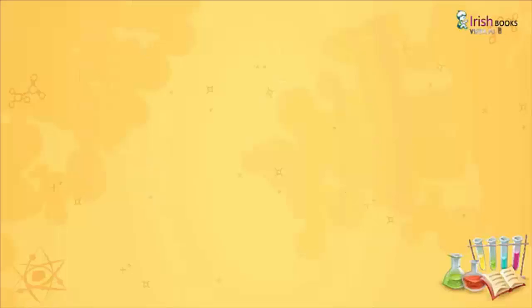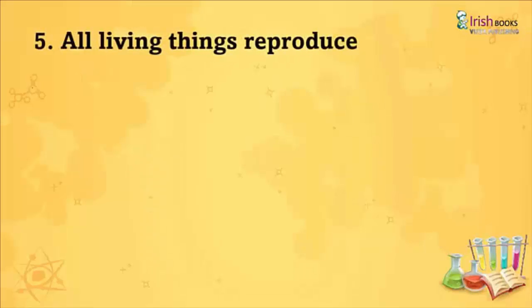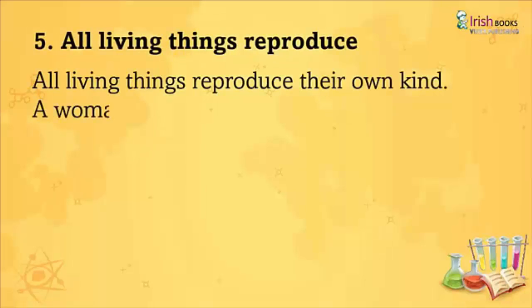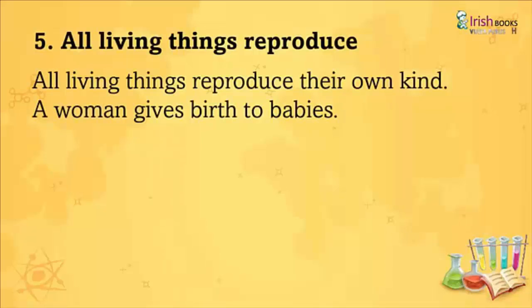All living things reproduce their own kind. A woman gives birth to babies. A hen lays eggs. Non-living things do not reproduce.